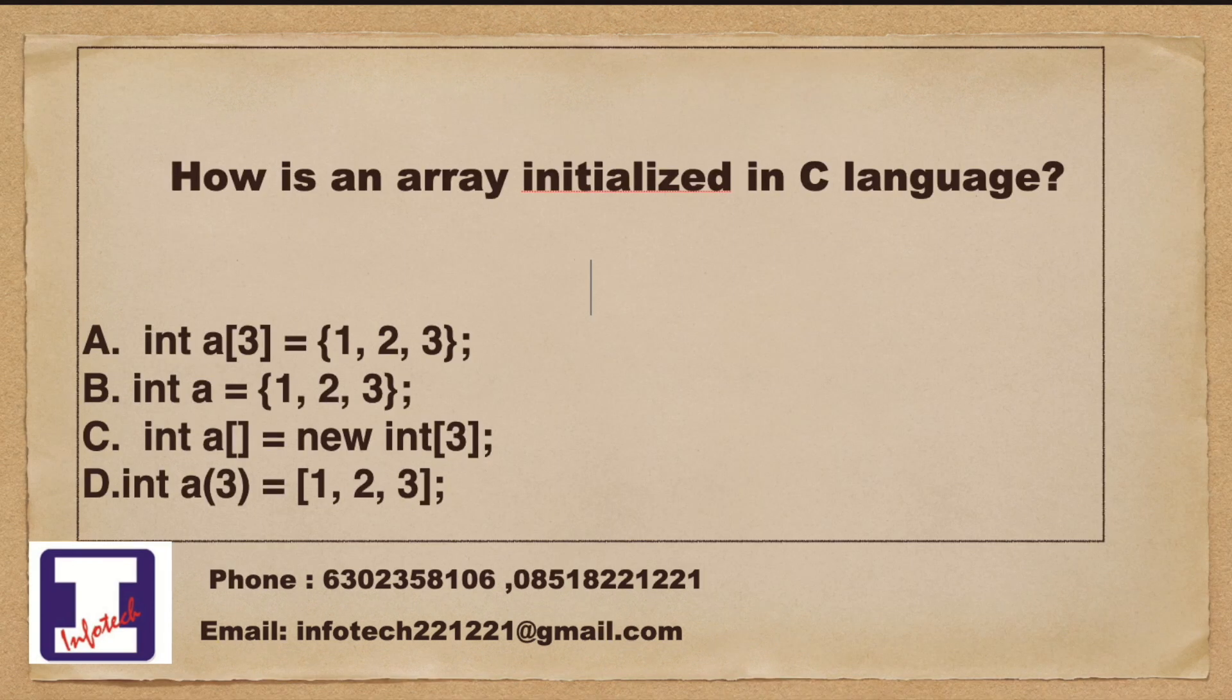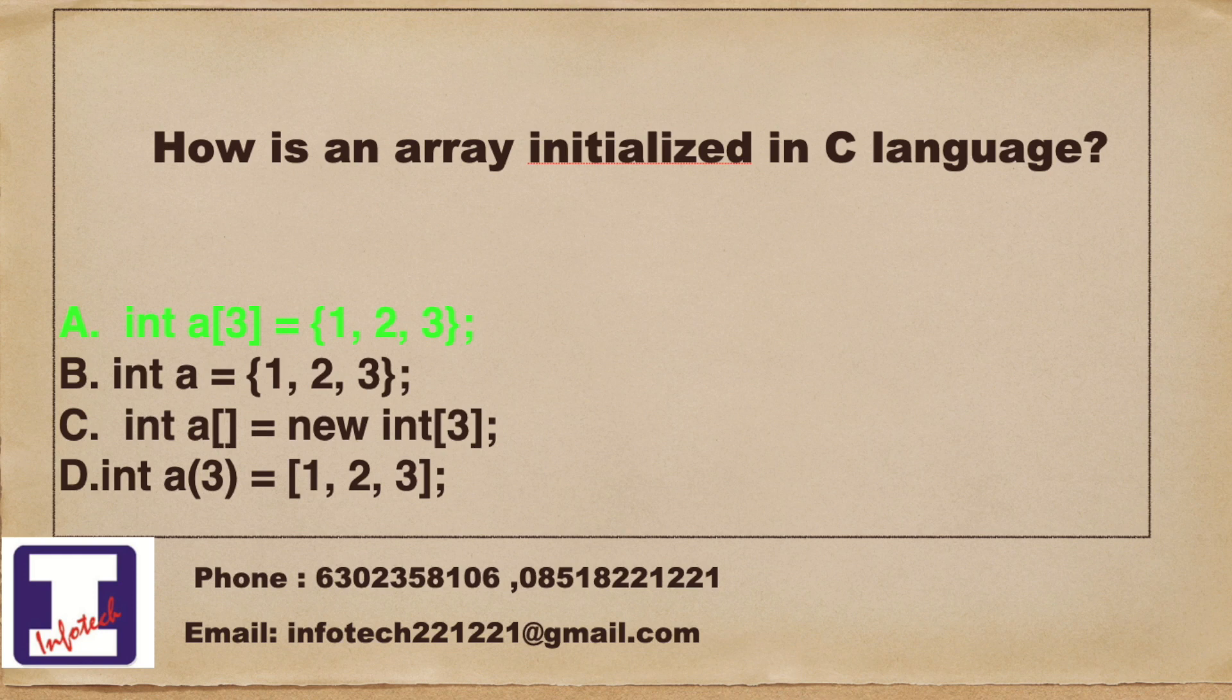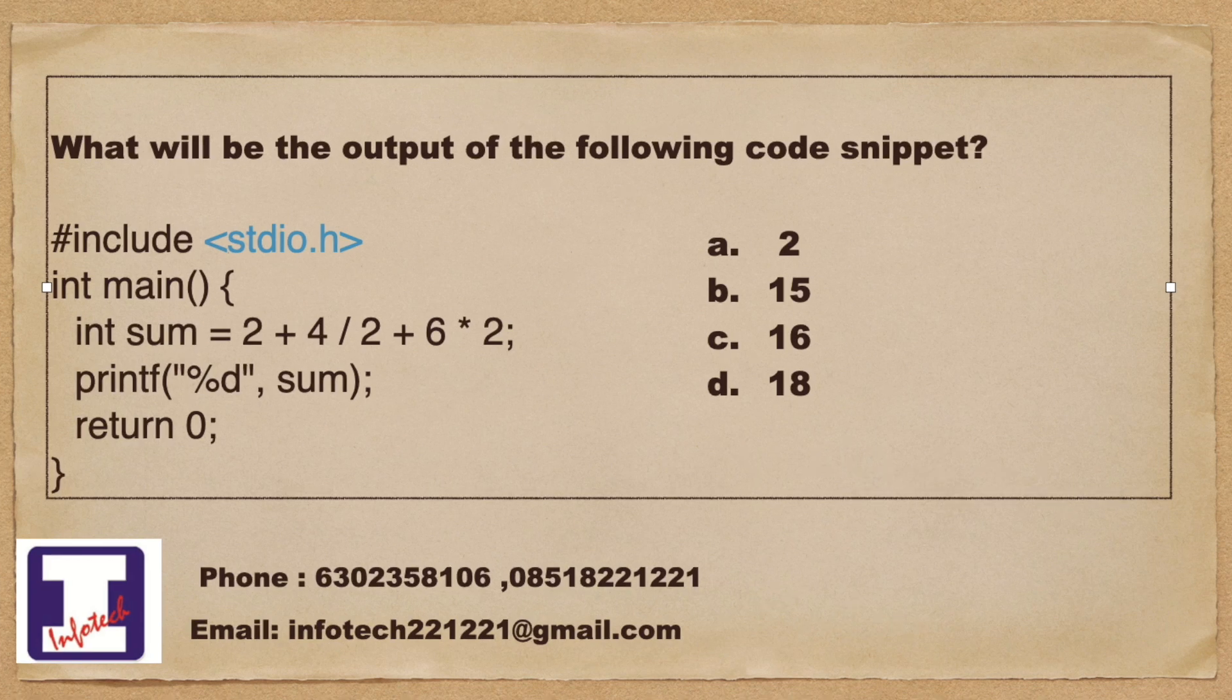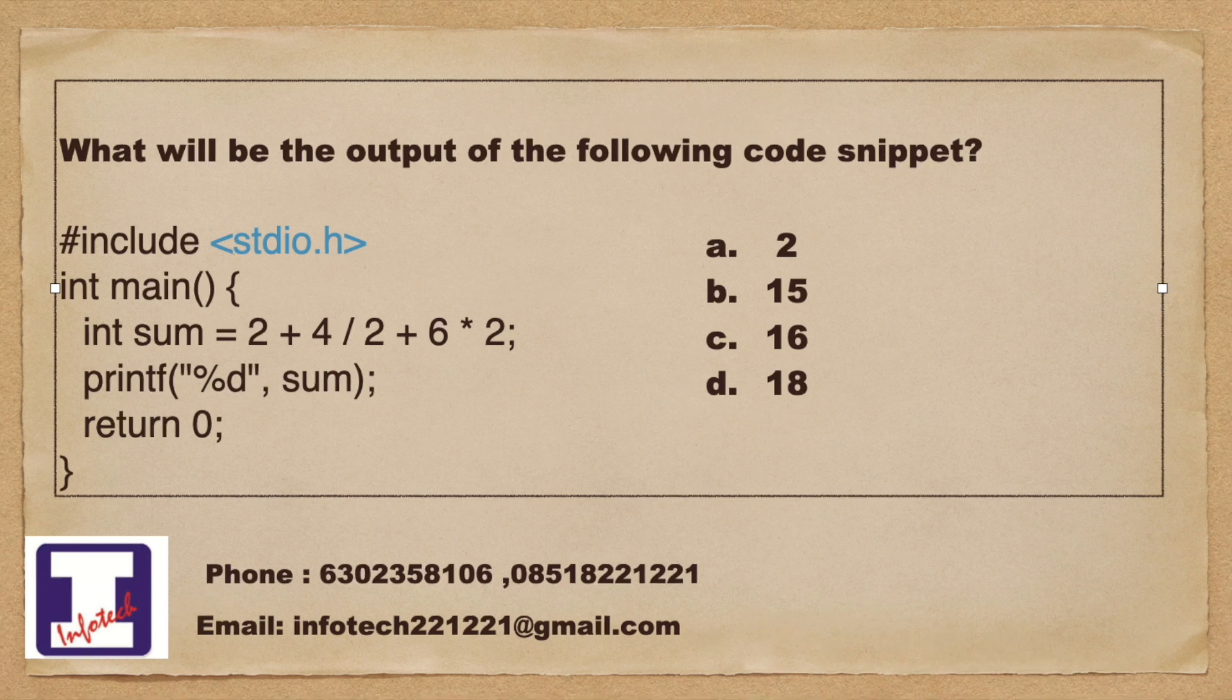How is an array initialized in C language? The answer is option a. What will be the output of the following code snippet? a. 2, b. 15, c. 16, d.